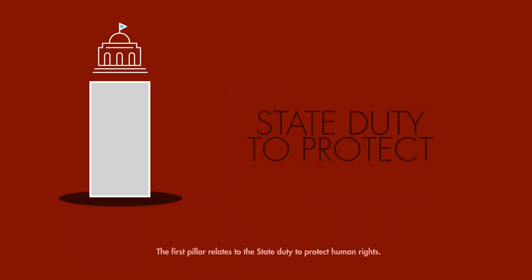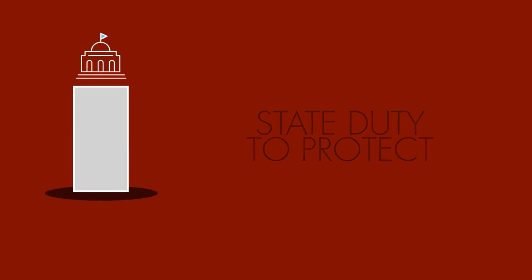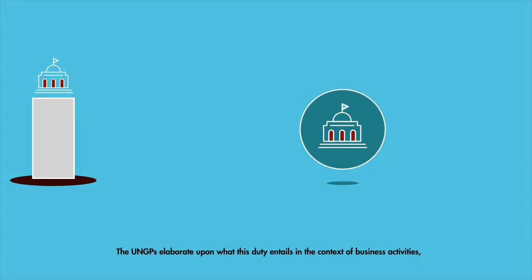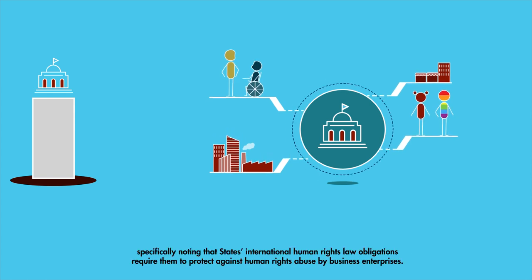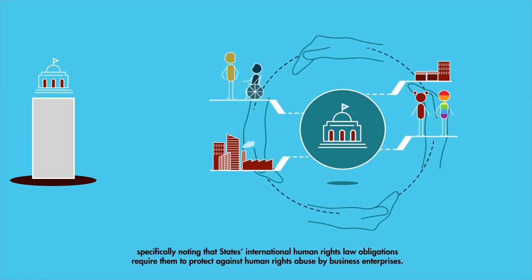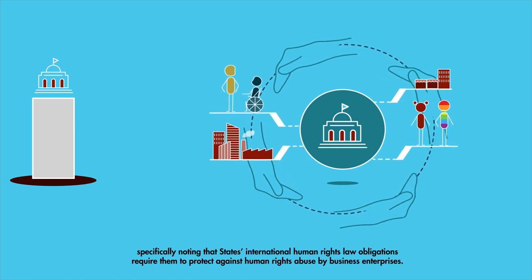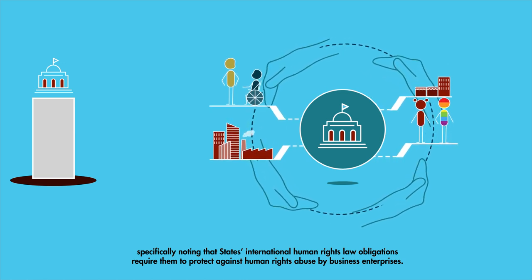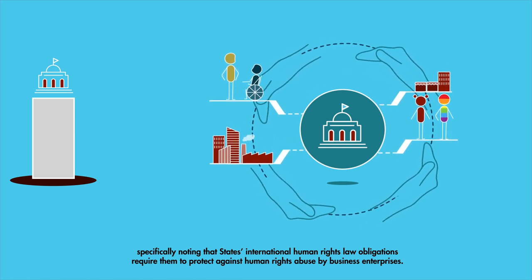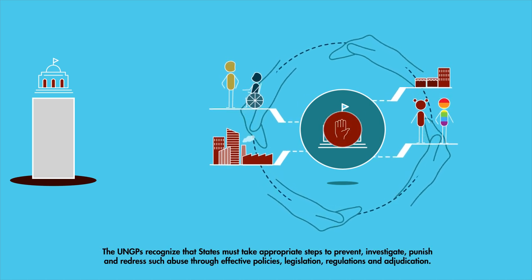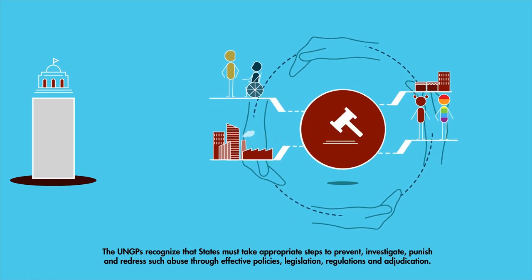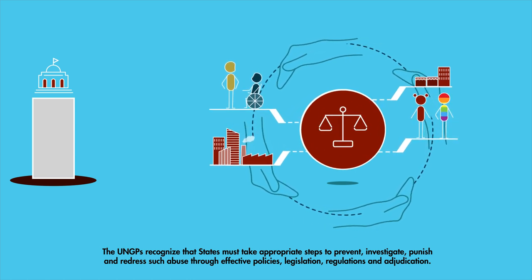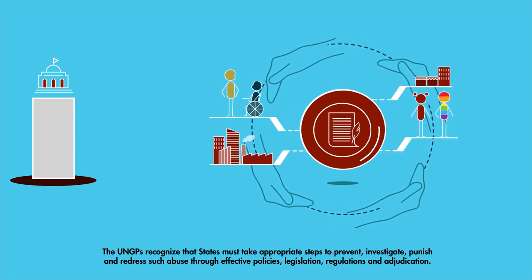The first pillar relates to the state duty to protect human rights. The UNGPs elaborate upon what this duty entails in the context of business activities, specifically noting that states' international human rights law obligations require them to protect against human rights abuse by business enterprises. States must take appropriate steps to prevent, investigate, punish, and redress such abuse through effective policies, legislation, regulations, and education.